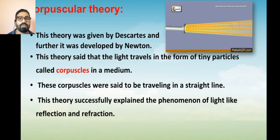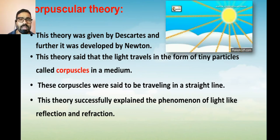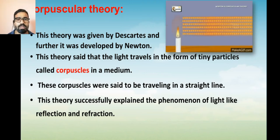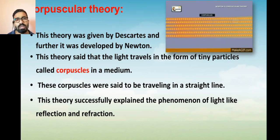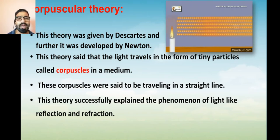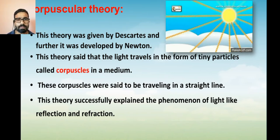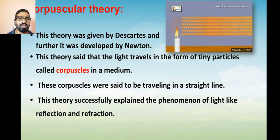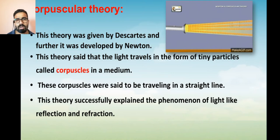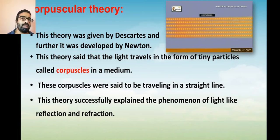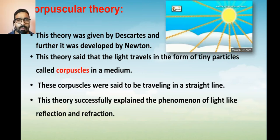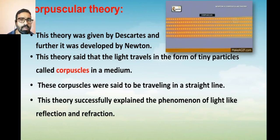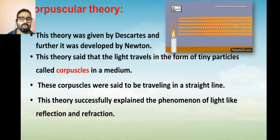The corpuscular theory was given by Descartes, a scientist whose picture you already saw. He worked extensively on the nature of light, but later this theory was developed by Newton. The results Newton obtained from this theory were recorded in his book called Optics. That is why it is more often attributed to Newton, although it was originally proposed by Descartes.